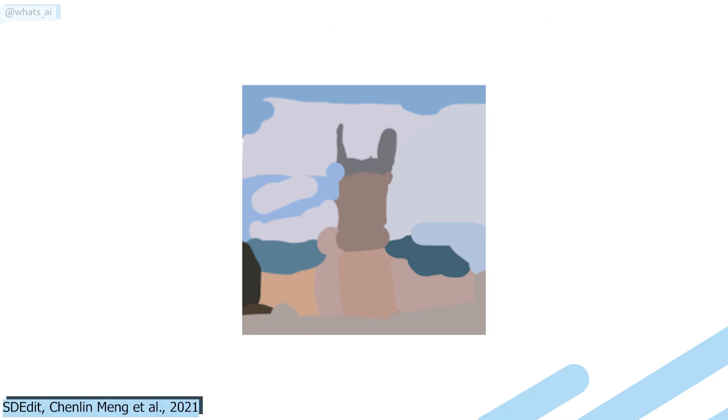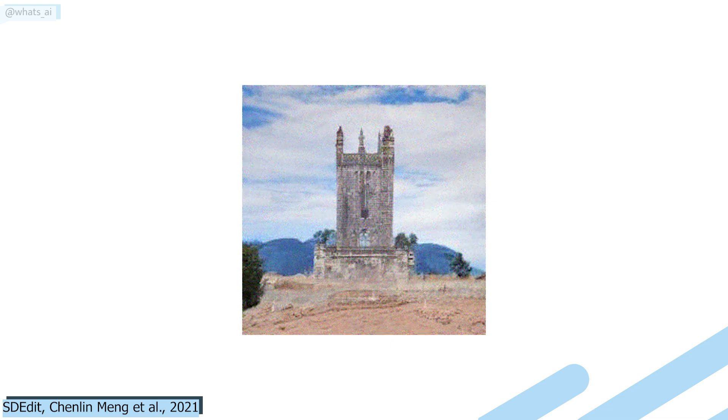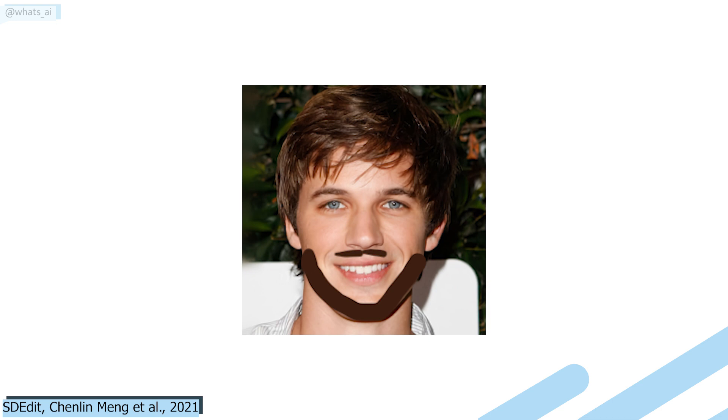It may sound weird at first, but just by adding noise to the input, they can smooth out the undesirable artifacts like the user edits while preserving the overall structure of the image. The image now looks like complete noise, but we can still see some shapes of the image, strokes, and specific colors. This noisy input is then sent to the model to reverse this process and generate a new version of the image following the overall shapes and colors, but not so precisely — it can create new features like replacing a sketch with a real-looking beard.